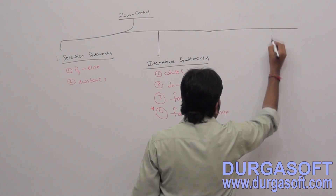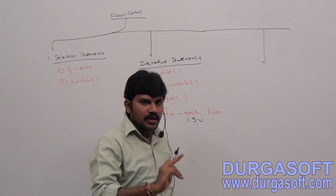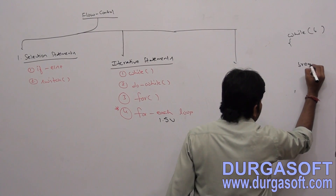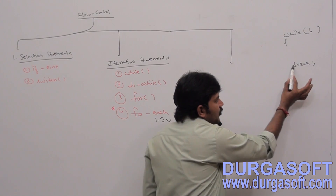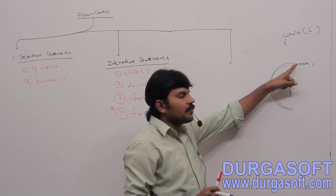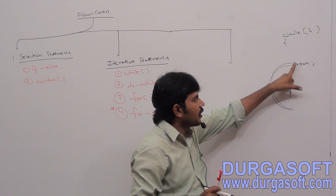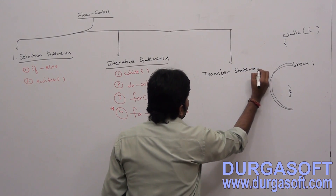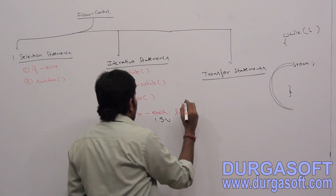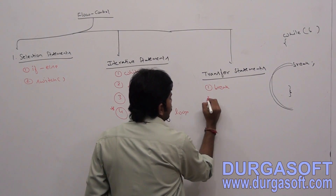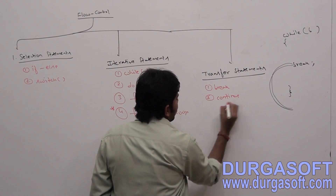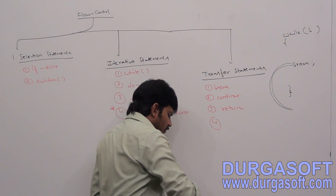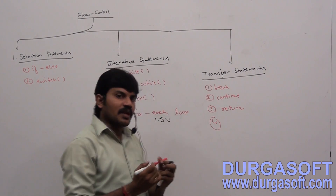The last category is transfer statements — used to transfer control from one place to another. For example, suppose you are inside a while loop and suddenly a break statement is encountered. Immediately, the control will be transferred to outside of the loop. This type of statement is a transfer statement. The transfer statements in Java are: break, continue, return, and also try-catch-finally.